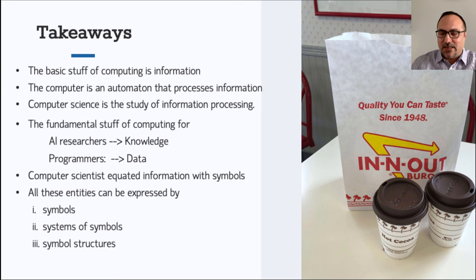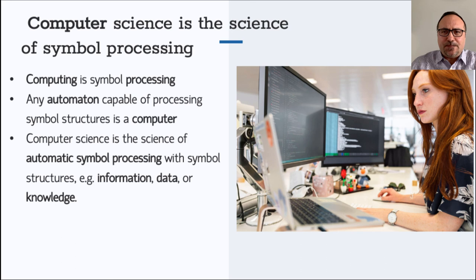The phenomena associated with computers are ultimately reducible to symbol structures and their processing. Computer science is ultimately the science of automatic symbol processing. We may choose to call such symbol structures information, data, or knowledge, depending on our particular culture within the computer science domain. The notion which sets computer science apart from other disciplines is the fact that computing is ultimately symbol processing. The computer is a symbol processing automaton, and computer science is the science of symbol processing.